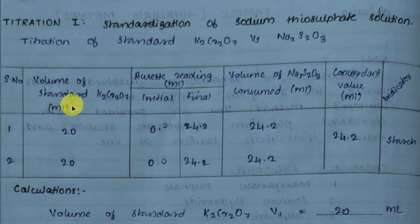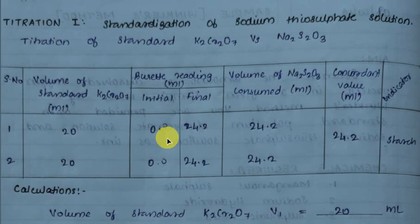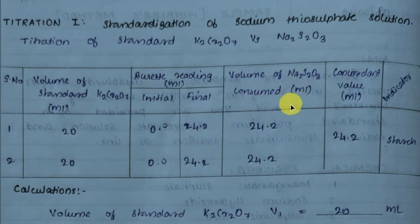For the standardization of sodium thiosulfate: take 20 ml potassium dichromate into a conical flask, add 1.5 ml potassium iodide, then 5 ml diluted sulfuric acid and 2-3 ml starch indicator. Iodine is liberated, so we titrate with sodium thiosulfate until the endpoint changes from blue to colorless or pale green. Initial burette reading is 0.0 and final reading is 24.2 ml, so volume of sodium thiosulfate consumed is 24.2 ml.